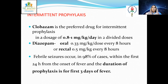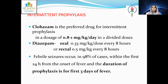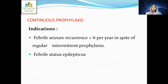Diazepam can be given orally at 0.33 mg/kg/dose every 8 hours, or 0.5 mg/kg rectally every 8 hours, though oral dosing is preferred. Since febrile seizures occur in 98% of cases within the first 24 hours of fever onset, the duration of prophylaxis is three days. Most intermittent prophylaxis now uses clobazam — previously diazepam was favored — at 0.8 to 1 mg/kg/day in two divided doses.